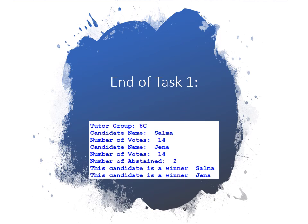Here's a sample output at the end of the program. For example, the tutor group is 8C. We have candidate Salma got 14 votes, candidate Jenna got 14 votes. The number of abstained votes is 2 because remember, there's a total of 30 students. This candidate is a winner: Salma, and this candidate is a winner: Jenna, because they had the most number of votes.